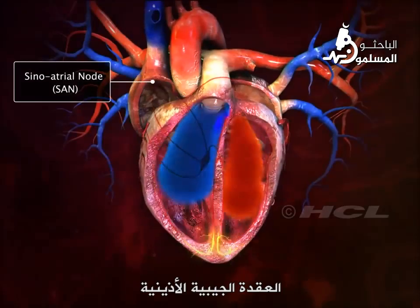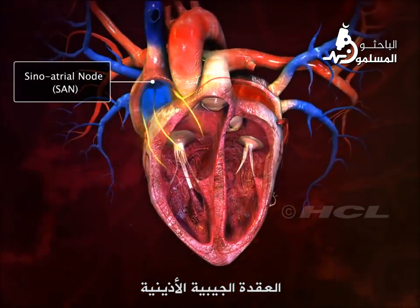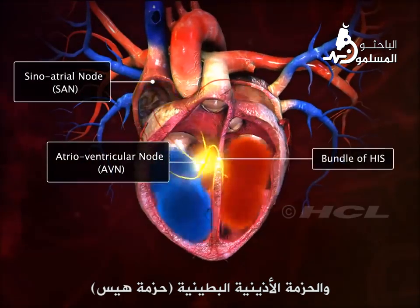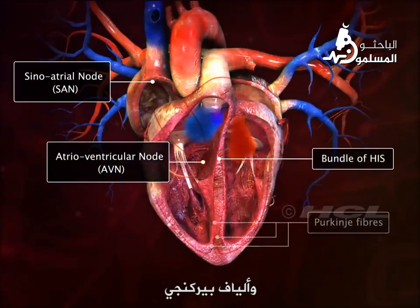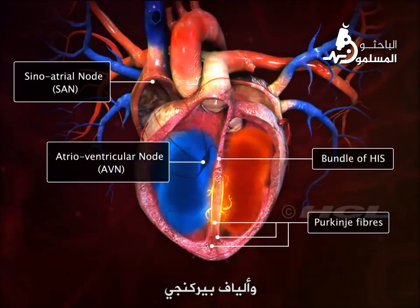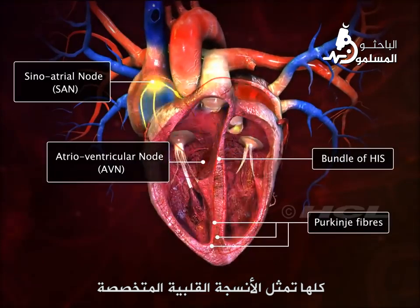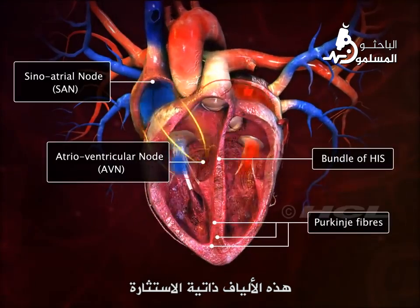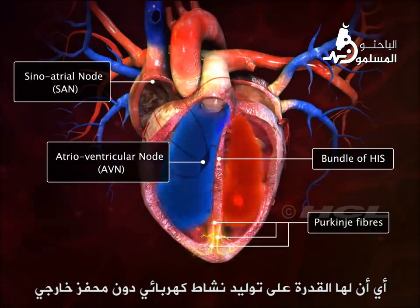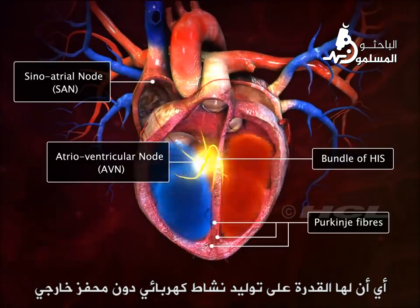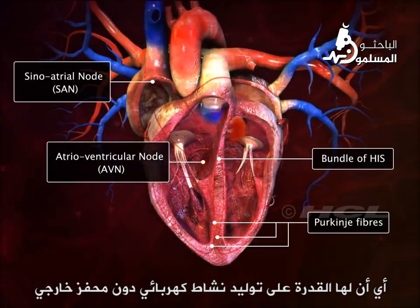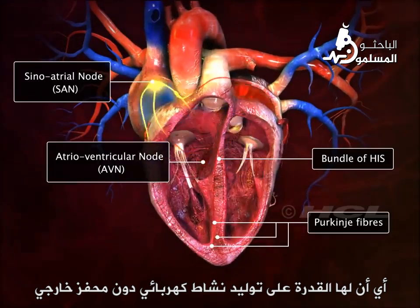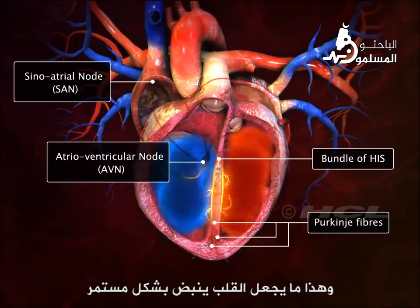The sinoatrial node, atrioventricular node, bundle of His, and Purkinje fibers represent the specialized cardiac tissue. These fibers are auto-excitable, as they have the potential to generate electrical activity without any external stimuli. This makes the heart beat continuously.